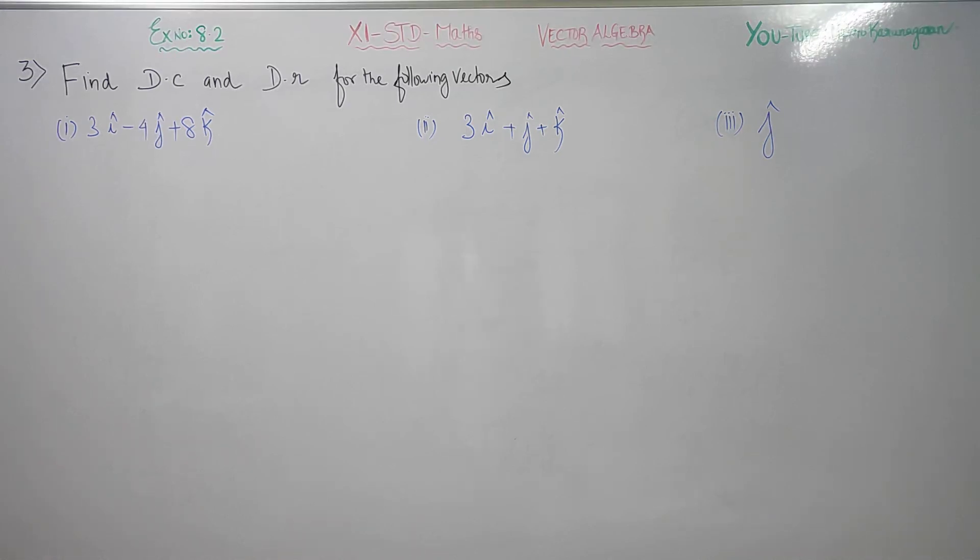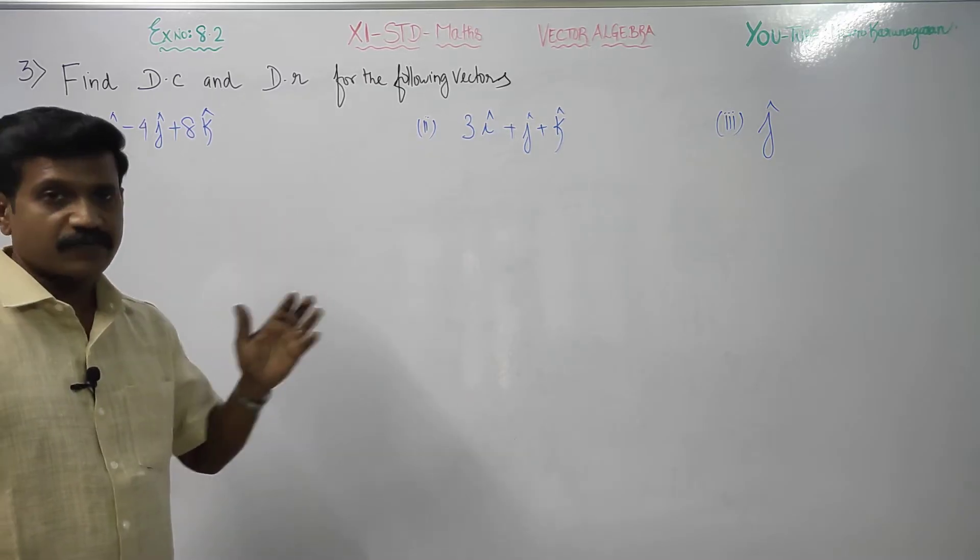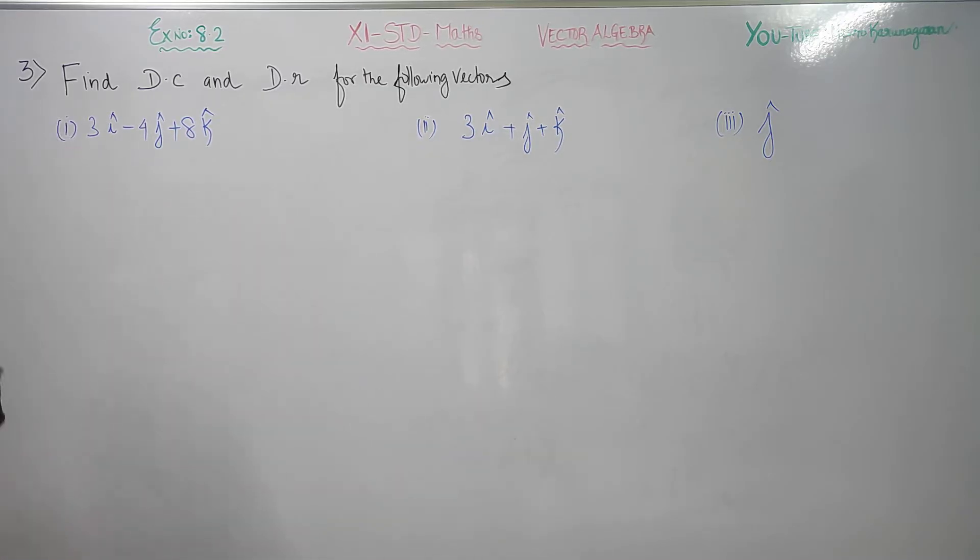Dear Leaven's Chandra students, in exercise number 8.2 sum number 3, find the direction cosines and direction ratios of the following vectors. First we will start with direction ratios. In case of i component, that is x value, x is equal to 3, then my y is equal to minus 4, then my z is equal to 8.